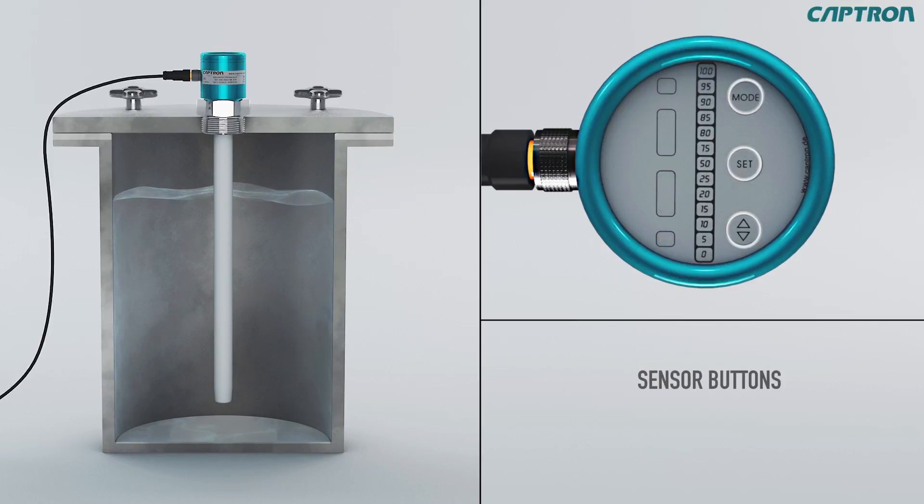The sensor buttons for operation. The mode button, with which you can reach the next set point without overwriting already saved settings. The set button, with which you reach the next set point and save the current settings. And the up-down button, with which you can set values and functions.